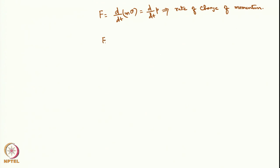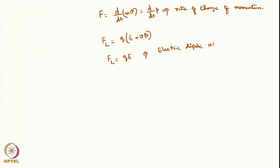Returning to the Lorentz force: FL = Q(E + V×B). In general, the magnetic field magnitude is much smaller, so one can neglect it, giving FL = QE. This is called the electric dipole approximation, wherein we only look at the electric field of the electromagnetic radiation, neglecting the magnetic field. For NMR or EPR spectroscopy this is not valid, but for rotational, vibrational, and electronic spectroscopy, it is valid.